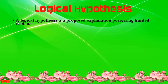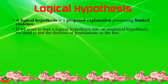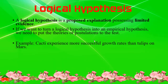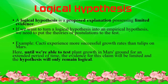Logical Hypothesis is a proposed explanation possessing limited evidence. To turn a logical hypothesis into an empirical hypothesis, we need to put the theories or postulation to the test. Example: cacti experience more successful growth rates than tulips on Mars. Until we are able to test plant growth in Mars ground for an extended period of time, the evidence for this claim will be limited and the hypothesis will only remain logical.